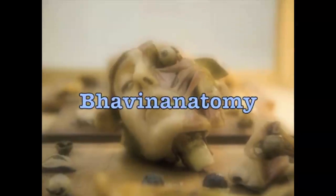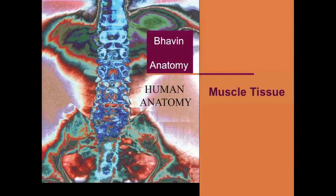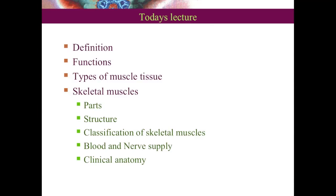Hello everybody. Welcome to Bavin Anatomy. Today we are going to start with muscle tissue. The collection of contractile cells together is called muscle tissue. By the end of today's lecture we will understand the definition and functions of muscle tissue, types of muscle tissue, and will study skeletal muscles in detail.